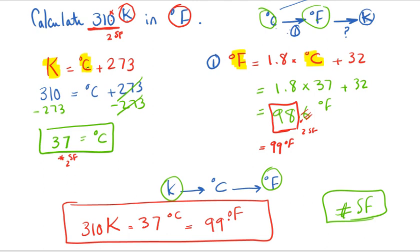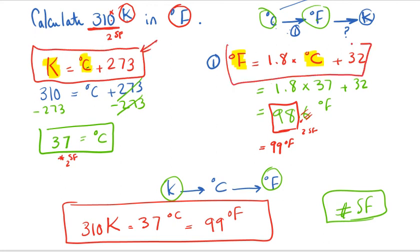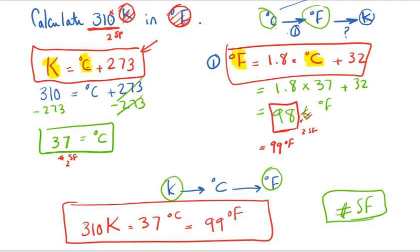This example gives you a better understanding of how to convert between temperature units using these equations. Most problems only require plugging into one equation — Celsius to Fahrenheit, or Kelvin to Celsius. When no direct relationship exists, use both equations step by step. Thank you for watching this video.